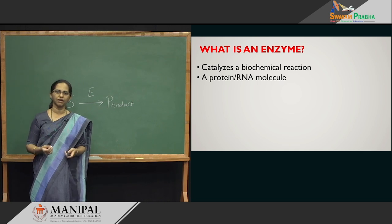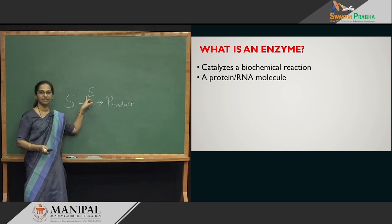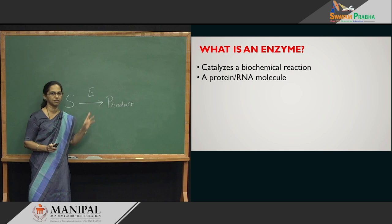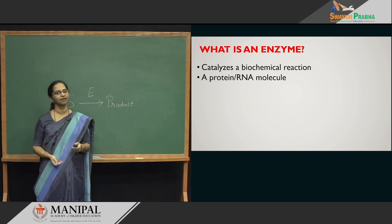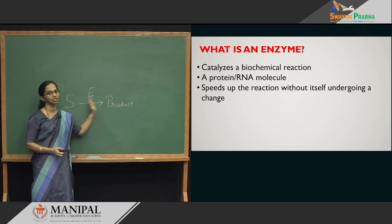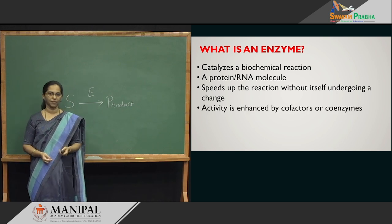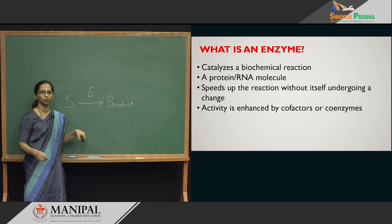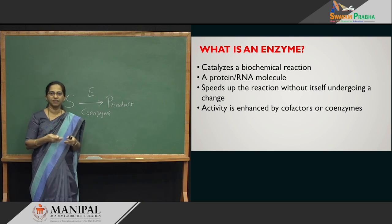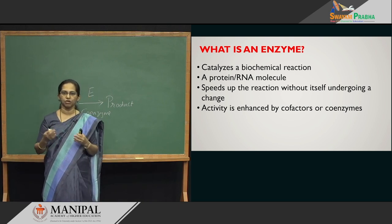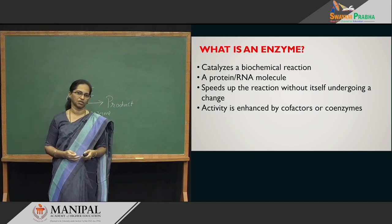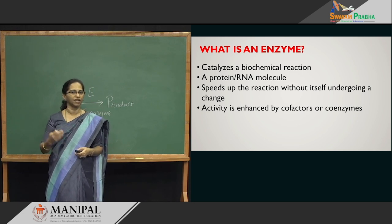Enzymes are just a protein or an RNA molecule. They are either proteins or sometimes can be an RNA molecule, but the majority of the time they are proteins. Enzymes speed up the reaction; the conversion rate goes on increasing. And if you have a coenzyme or a cofactor along with the enzyme, you can further speed up the reaction.